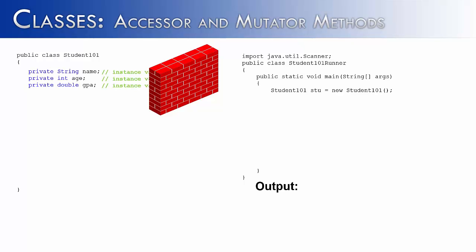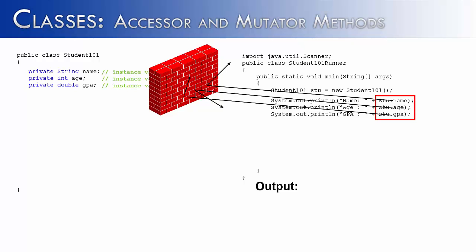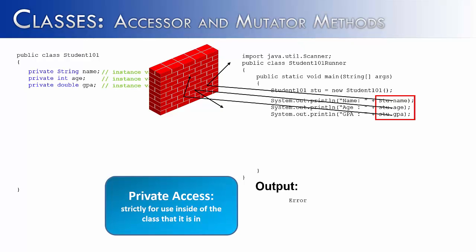This is creating a wall between name, age, and GPA and any other class that might want to access them. So if we try to access name, age, and GPA directly, we would run into that wall created by the keyword private. The output would be an error saying name, age, and GPA have private access. Private access is strictly for use inside of the class that it's in. Only members of the Student101 class can access name, age, and GPA.